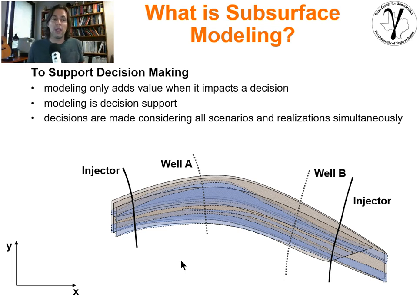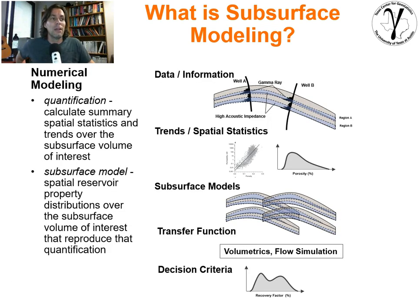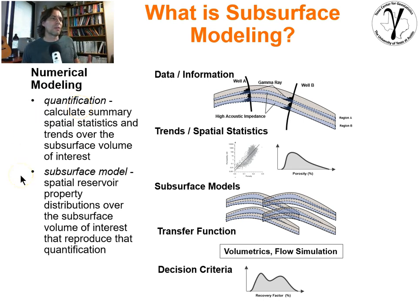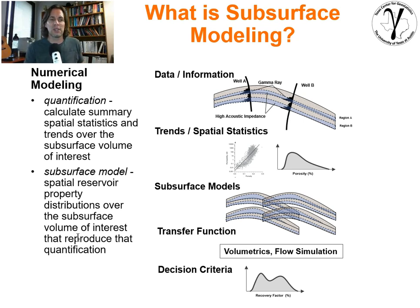If we place injectors for a waterflood based on looking at all of the multiple models of uncertainty and optimizing over all of them jointly, we've added quite a bit of value. We've provided the best decision for where to place our injectors given all the information integrated together. Subsurface modeling requires two fundamental steps: quantification — where you calculate summary statistics, understand the trends and behaviors of the properties of interest over the volume of interest — and then subsurface modeling itself, where we take those spatial reservoir property distributions from the quantification step and reproduce and impose them upon that volume of interest.